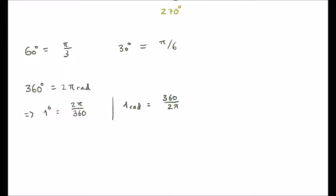How do we convert between degrees and radians? Well if there are 360 degrees in 2 pi radians, then 1 degree corresponds to 2 pi over 360. And 1 radian corresponds to 360 divided by 2 pi.